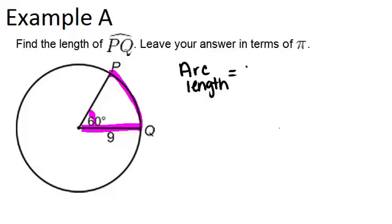So in general the formula is 2πr for circumference times θ over 360, where θ is the central angle. θ over 360 tells you the fraction of the circle that the arc you're looking for is.